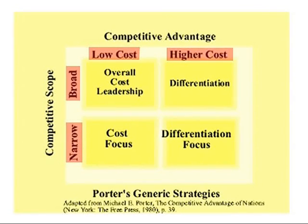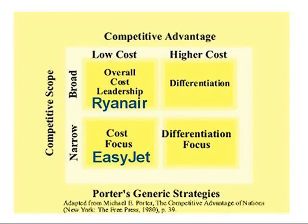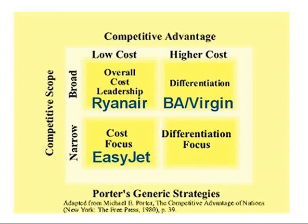In the airline scenario: a company going low cost after a broad segment would be something like Ryanair — that fits quite happily. A narrow market that's still low cost, going after business travel — EasyJet fits in there nicely. Then a high cost to a broad market could be BA or Virgin, offering a slightly higher cost with no frills but going after all different types of markets.